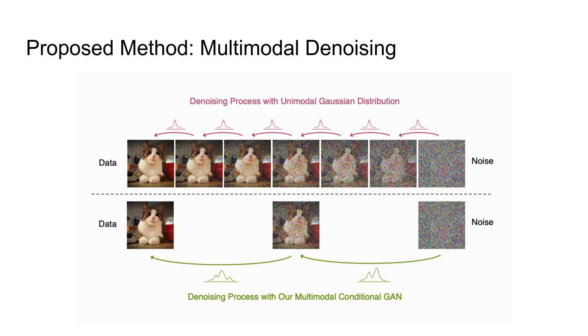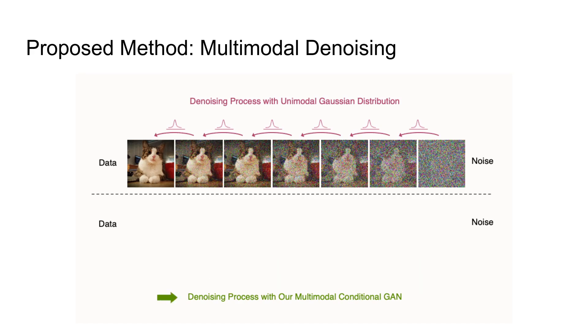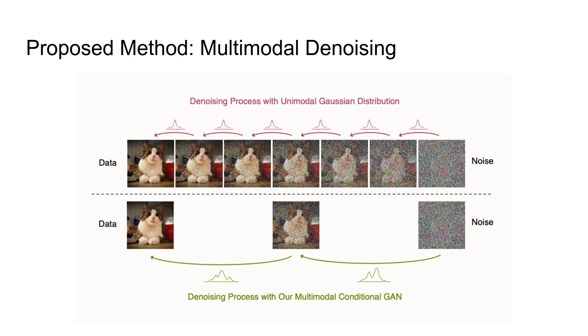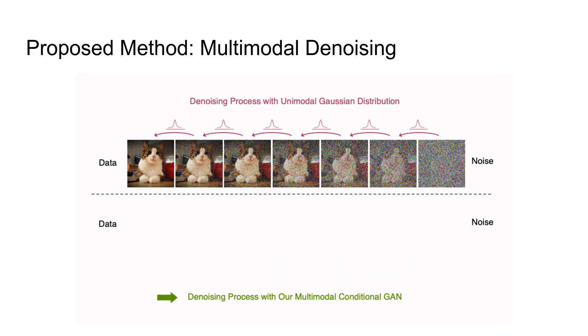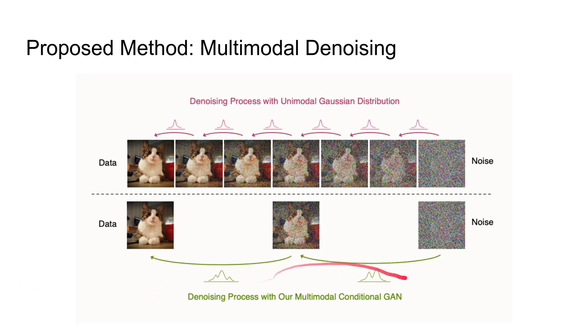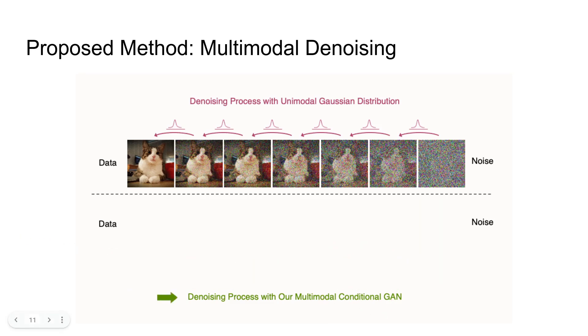Carry out the denoising process using multimodal distributions. Using these complex denoising distributions will allow us to denoise multiple steps at once. In order to achieve this, the authors propose denoising diffusion GANs. They use a full-blown multimodal conditional GAN at each step of the diffusion. This makes it possible to denoise with complex distributions.